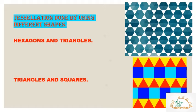Can you identify the two shapes used in the second figure? Yes, the second figure is an example of tessellation done by using triangles and squares.